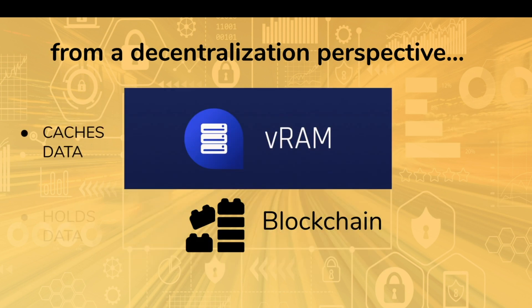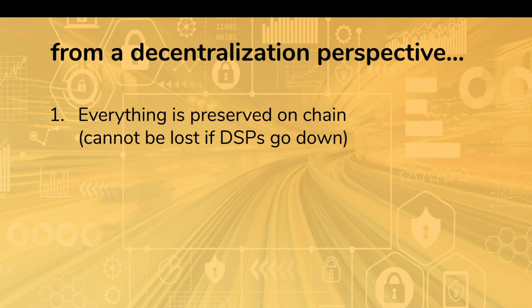From a decentralization perspective, VRAM is caching data from the blockchain, so you still have all your data in an immutable ledger — it's just much more accessible in VRAM. You don't have to hold it in RAM all the time, because VRAM caches the data so you can warm it up into RAM quickly without replaying the blockchain. And because it's held in the blockchain, you have assurances against manipulation and loss. Everything is preserved on chain — it can't be lost even if all the DAP service providers go down. Tests have shown that data can be replayed and restored in a short amount of time.